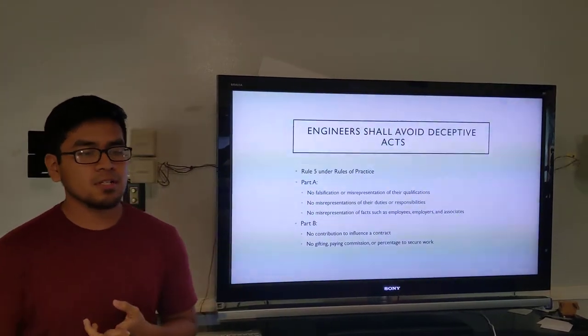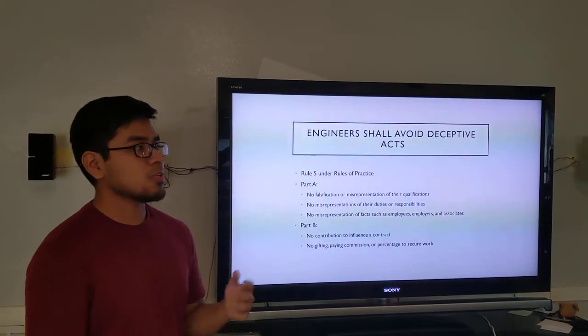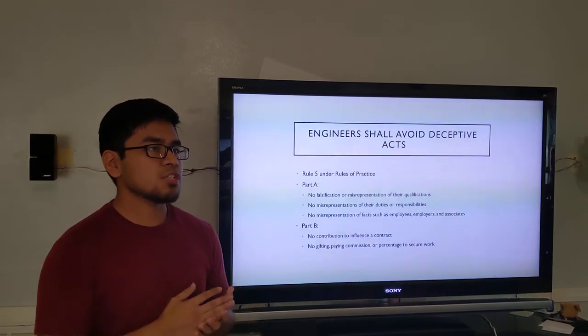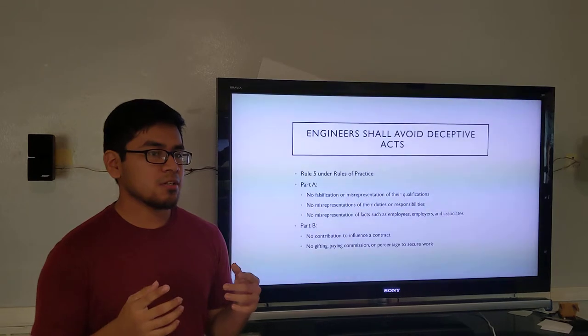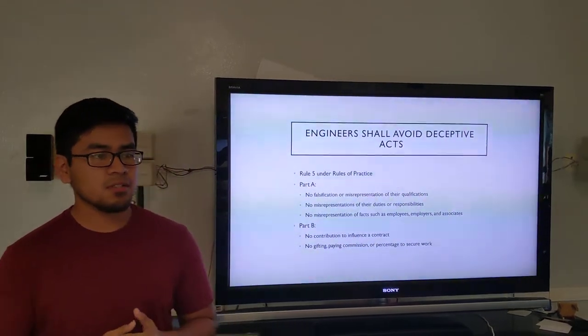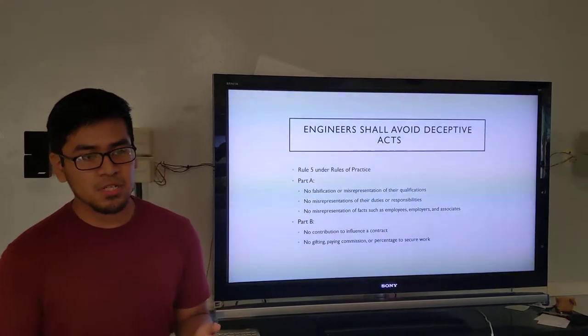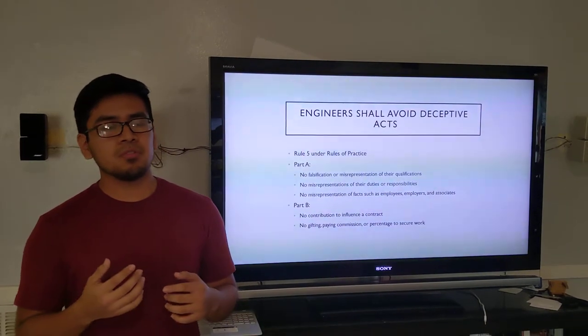I think this ties in with another rule, which is rule number two, which is engineers shall only perform tasks in the area of their competence. So one way for, so this rule basically means that a civil engineer won't be able to do something that a chemical engineer would do. They can't just walk in there and say, oh, I can do what a chemical engineer does because I'm an engineer. It's not how it works.